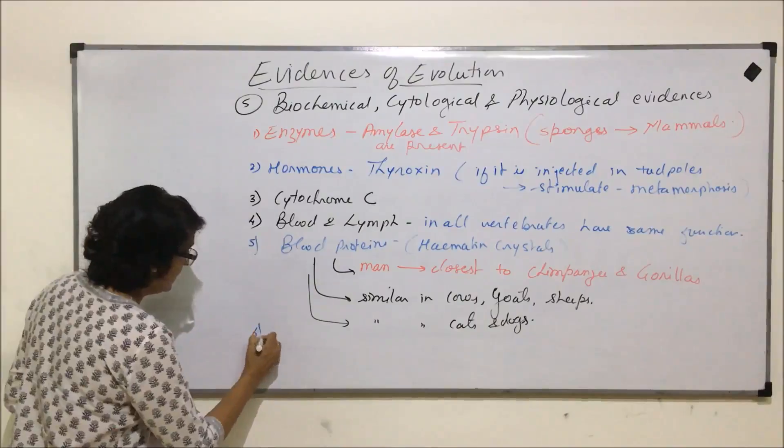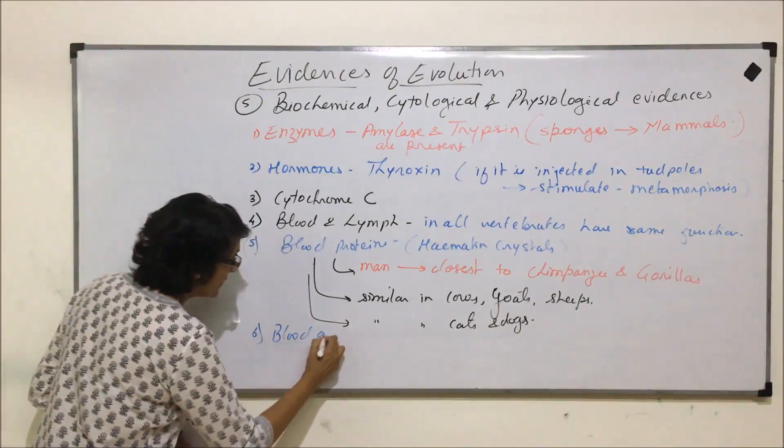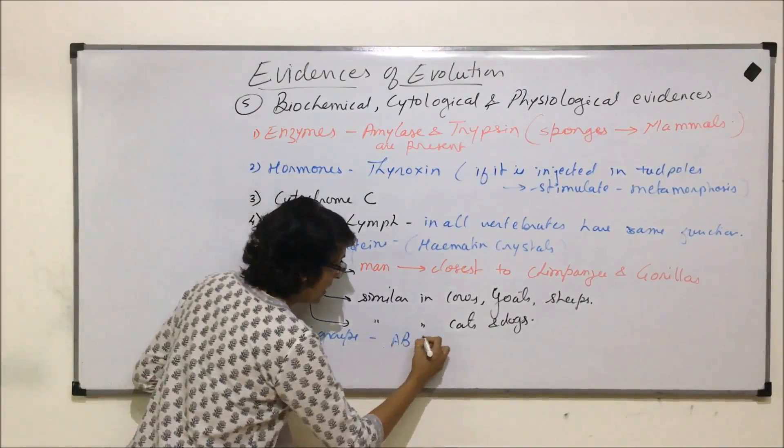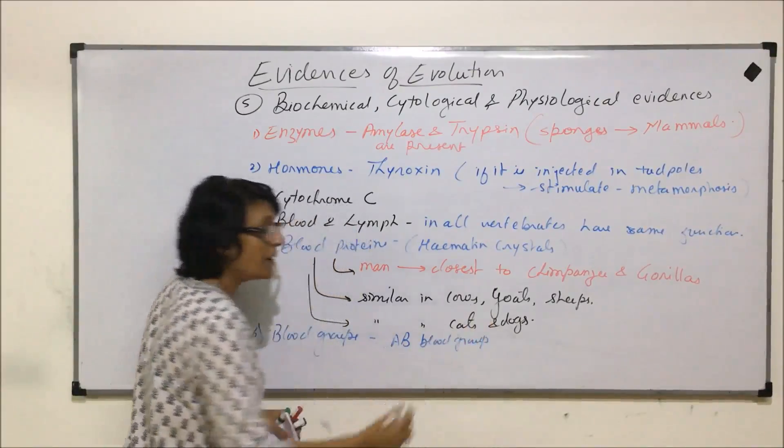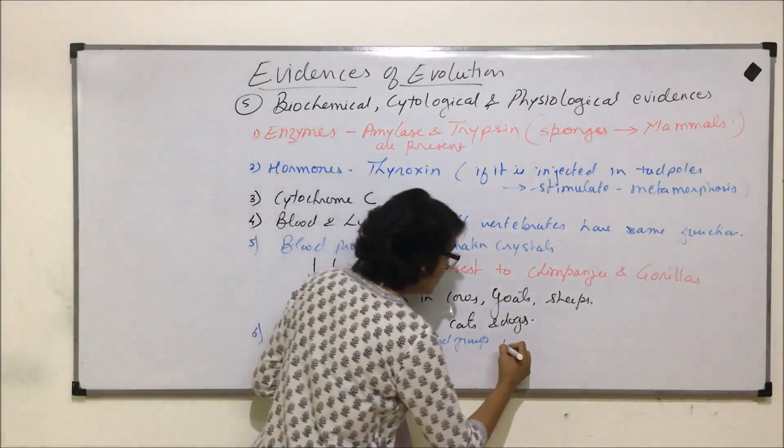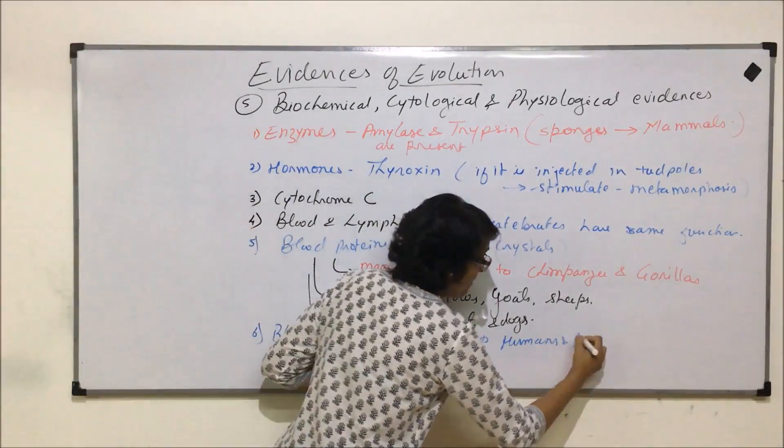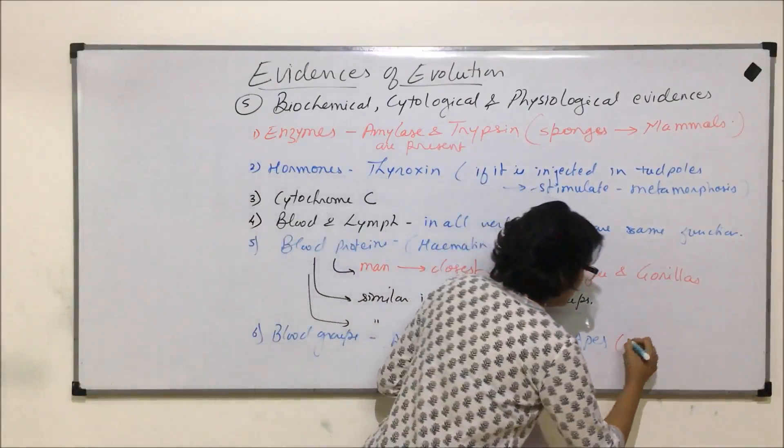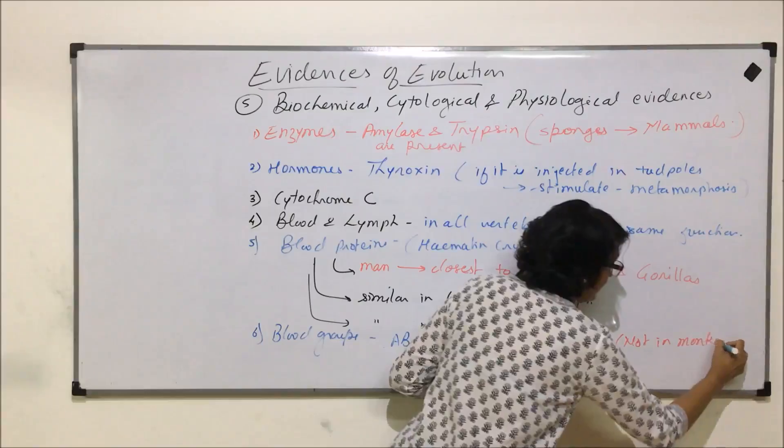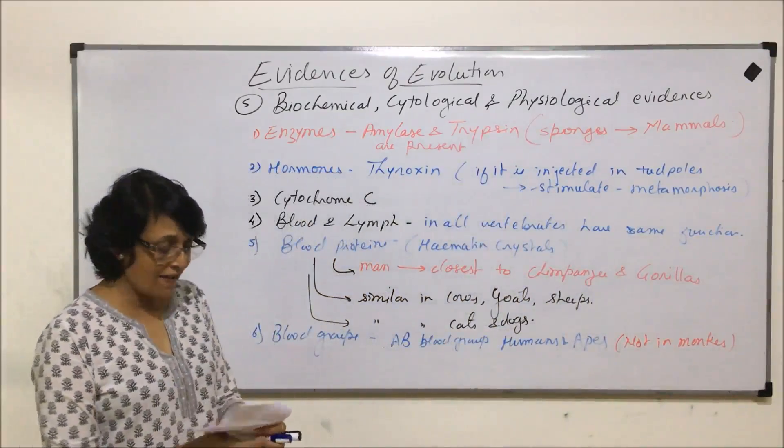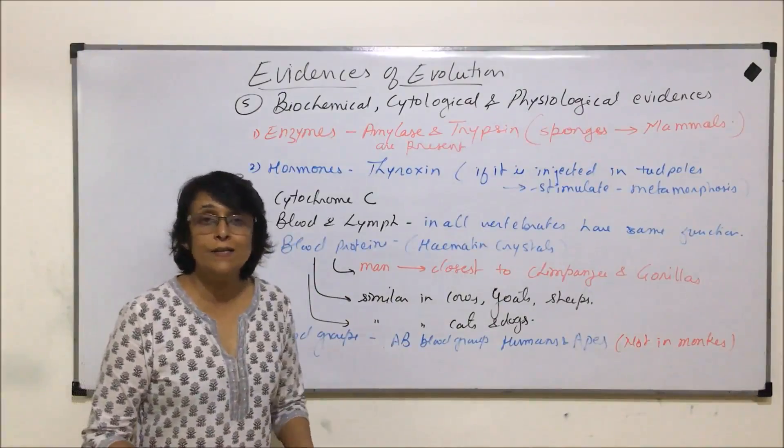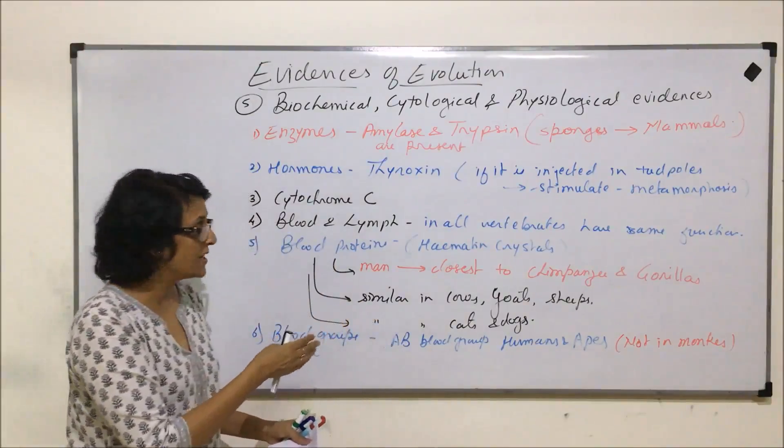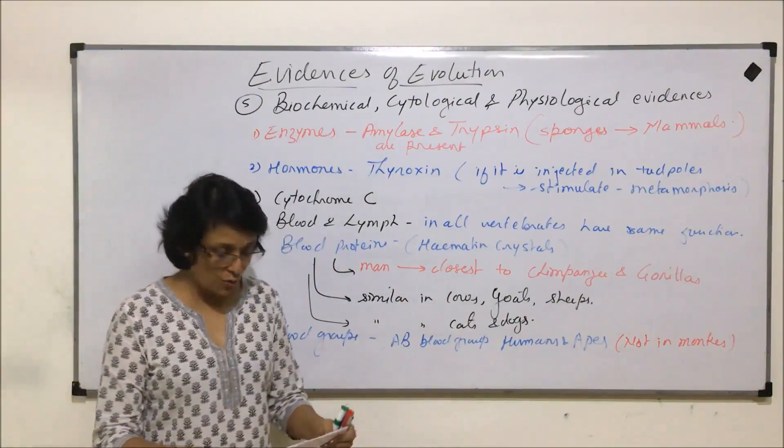Then let us take the next category, that is blood groups. We know of ABO blood group. This ABO blood group is found in humans and apes, but it is not seen in case of monkeys. So apes and humans have it. So when we study human evolution, we also understand that we have deviated from the same ancestors. So one ancestor branch has given rise to apes and the other one has given rise to human beings.